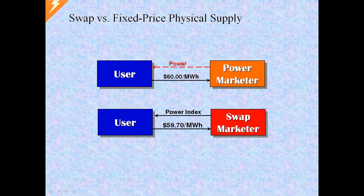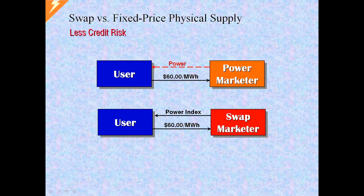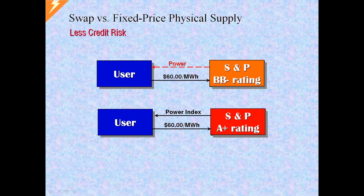A secondary explanation for more favorable prices is the incremental physical supply risk perceived by the marketer. If there are significant concerns about potential delivery problems, the physical dealer may well add a risk premium to the price of physical. On the other hand, the swap dealer never has to contend with these physical risks, so has no need of a risk premium. A non-price advantage also goes to the swap: hedgers have reported getting higher quality credit counterparties when dealing in the financial market.